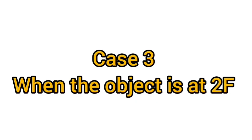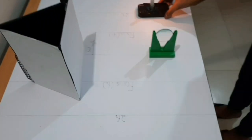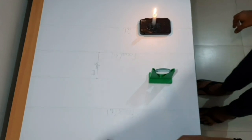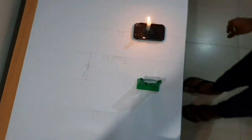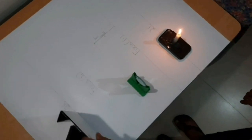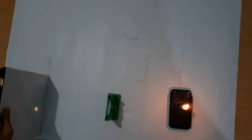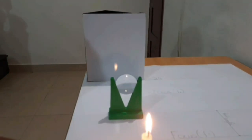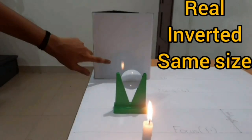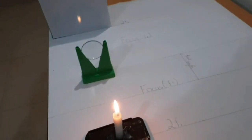In case three, we will see the formation of image by the convex lens when the object is at 2f. Place the candle at 2f, that is 20 centimeters — twice the focal length. Adjust the screen to get a sharp image. The image formed is real, inverted, and the same size as the object.